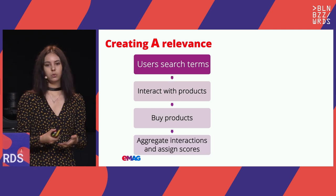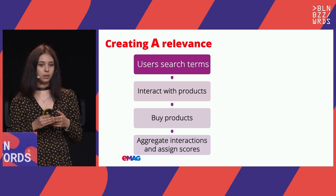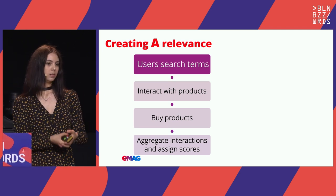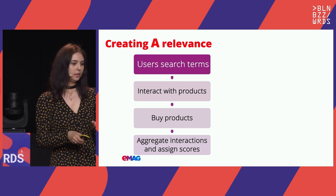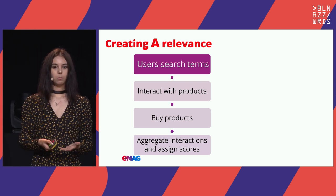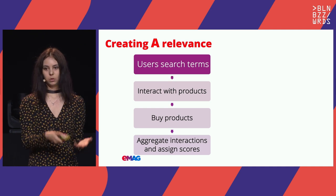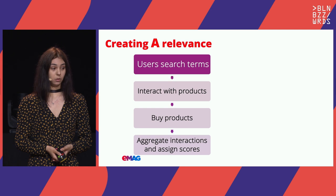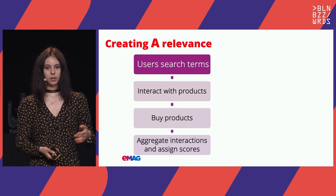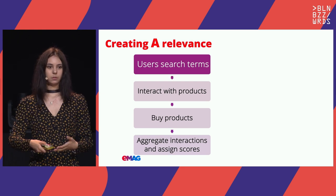Our only job is to aggregate this interaction data at a certain level, most commonly the term or the search session level, and assign some scores. At this score assignment stage there might be some heuristics involved, but they usually reflect the particularities of the data that you have. And while we might do some data cleaning in this step, this type of relevance is very much the will of the people.